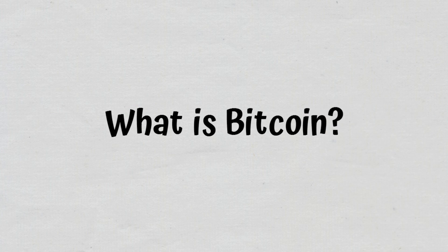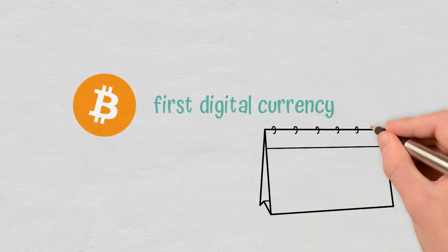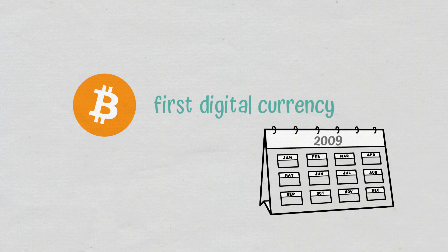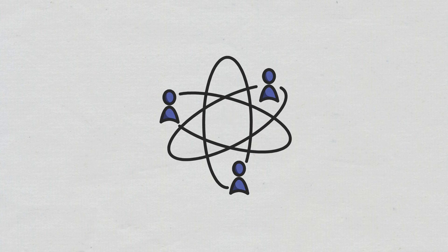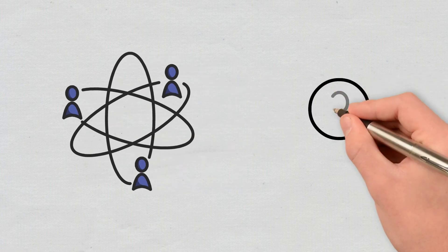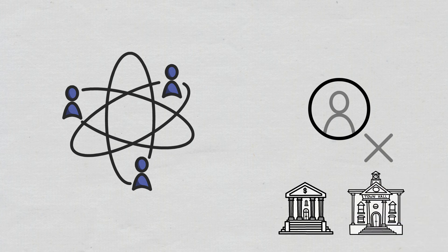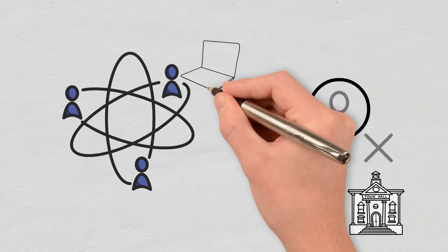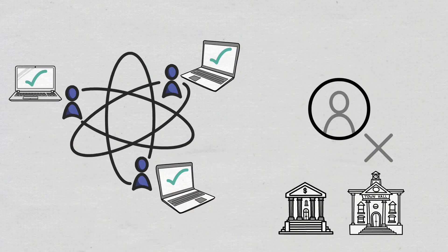What is Bitcoin? Bitcoin is the first digital currency, and it was created in 2009. Since it is decentralized, it doesn't require the help of intermediaries, such as banks or governments. Instead, it uses a peer-to-peer computer network which confirms the transactions made.